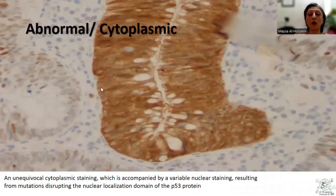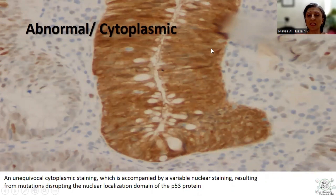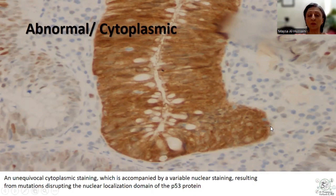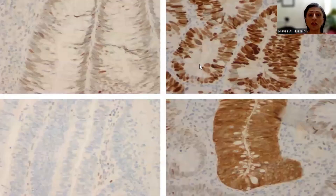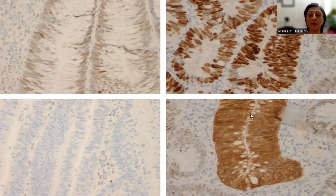The least common abnormal pattern is cytoplasmic, in which you see cytoplasmic staining associated with faint nuclear staining. This is the least common pattern, and again in the background we have some glands showing mosaic or wild-type or normal staining pattern, while this particular gland shows abnormal or apparent mutant P53 associated with cytoplasmic staining. To sum up, this is the normal wild-type staining pattern, and the three patterns — overexpression, null, or cytoplasmic — are associated with abnormal expression of P53, which is most often associated with a mutation.